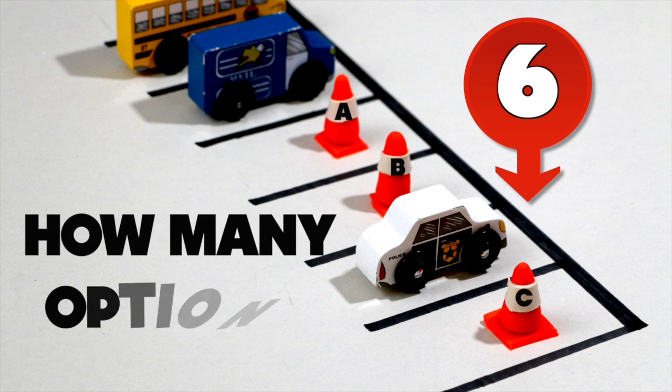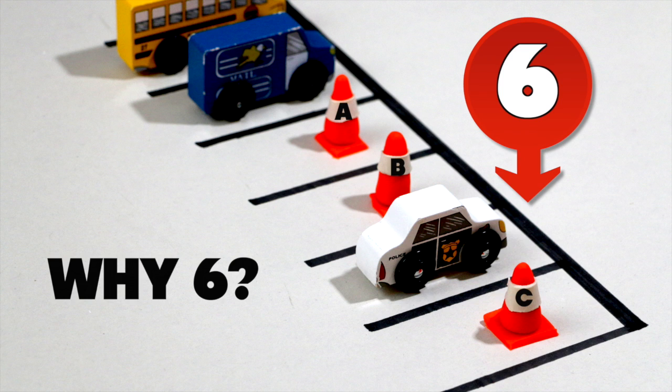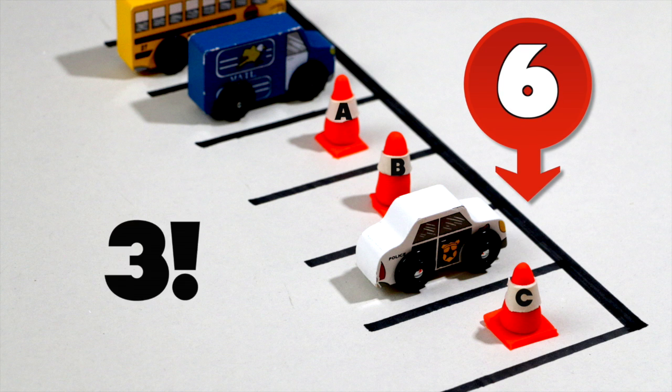I think that's six. All right. It should be six. And the question is why six? Well, it turns out that we were just ordering three things and we knew how to do that math, right? The way we could find out how many ways three things can be ordered is three factorial and three factorial is six.